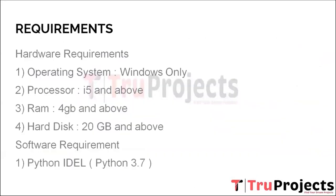Coming to the requirements: there are two types — hardware and software. Hardware requirements include Windows OS, an i5 processor or above, minimum 4 GB RAM, and 20 GB or more of hard disk space. For software requirements, Python IDE version 3.7 is required.